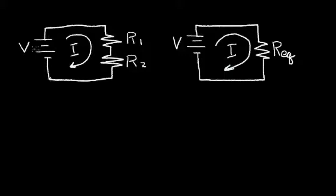I have a battery with a voltage V that applies a voltage across R1 and R2. On the right I have an equivalent circuit. It has the same voltage V and it has the same current flowing in the circuit I. And I want to calculate the equivalent resistor to R1 and R2.